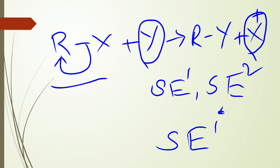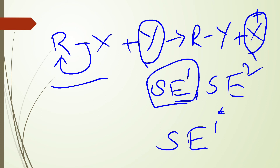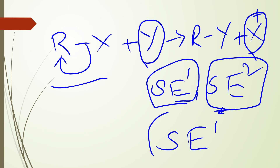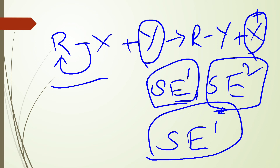Generally, aliphatic electrophilic substitution follows three types of mechanisms: SE1 Mechanism, which is Unimolecular Electrophilic Substitution; SE2, which is Bimolecular Electrophilic Substitution; and the third one is SEI, Intramolecular Electrophilic Substitution. The electrophilic substitution reaction follows one of these three mechanisms. Now, let us know the mechanisms one by one.